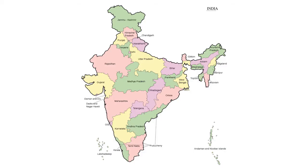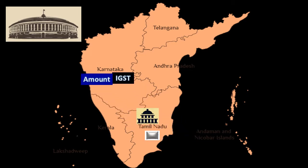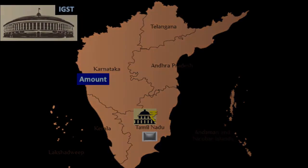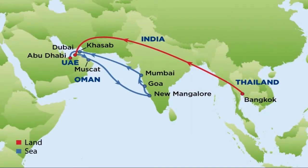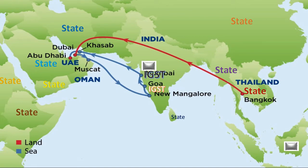In India, GST is applied in the case of intra-state transactions and inter-state transactions. If the taxable supply takes place between two states, GST is charged by the seller as Integrated GST, and the tax collected goes to the central government, which then redistributes it to the state government where the product is consumed. Even in the case of transactions with other countries, those countries are treated like states in India. Therefore, when we import goods from another country, IGST is charged, and when we export goods, IGST is charged — but under the GST act, since exports are zero-rated, no tax is applied on exports.